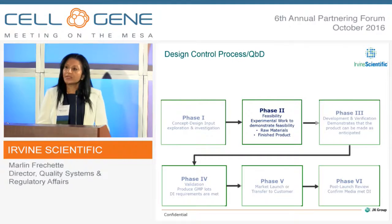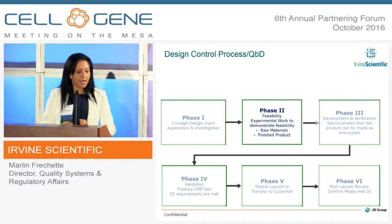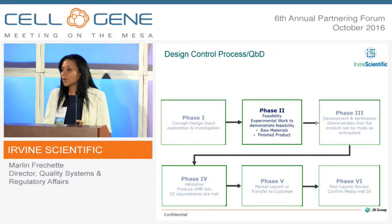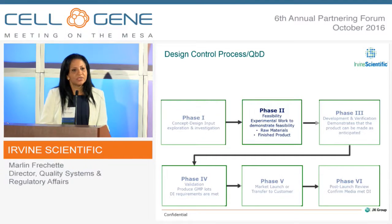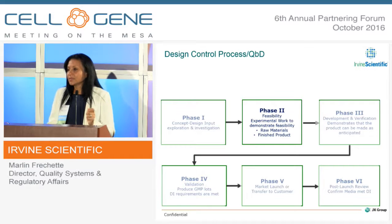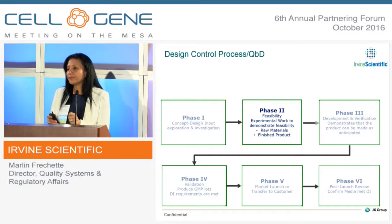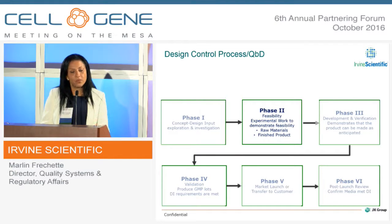The design control process at Irvine Scientific has been designed to follow six different phases. Because of time, I am only going to concentrate on phase two, where the most important part of design control takes place for cell therapy media. Phase two is where all of the raw materials that are going to be used in that final formulation are analyzed one by one.